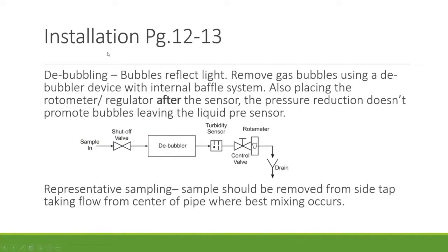For installation, bubbles are removed using a debubbler device with a baffle system. Another way to mitigate bubbles is by placing a restriction after the sensor — if pressure reduction occurs before the sensor, it creates an aerosol effect introducing bubbles. By placing flow or pressure control after the sensor, those bubbles are avoided.